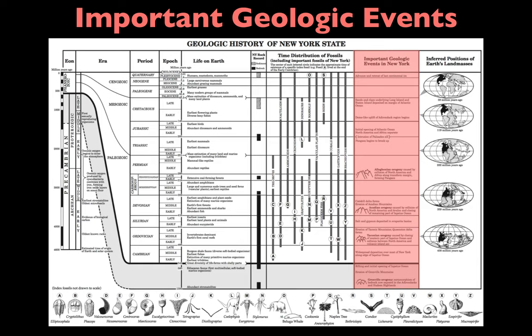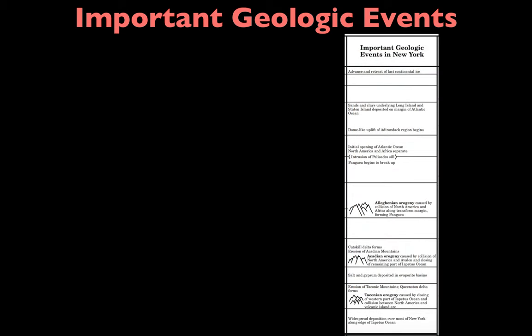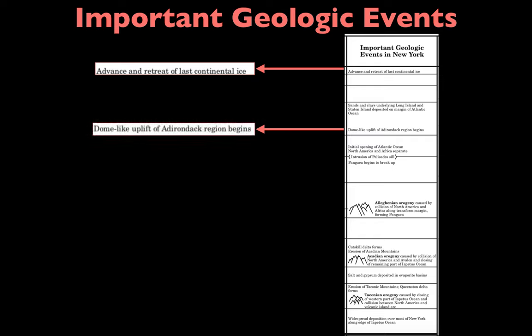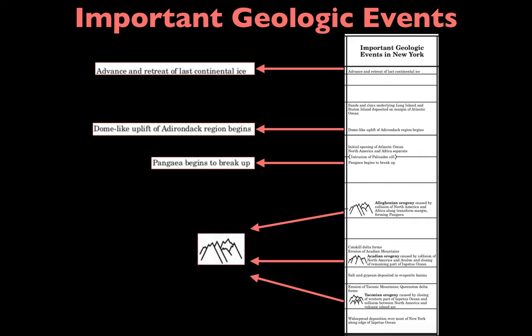Another column covers important geologic events in New York State's history. The most recent event at the top of the chart is the advance and retreat of the last continental ice sheet — the last ice age New York State experienced. Further down is the dome-like uplift of the Adirondack region, followed by the breakup of Pangea. At the bottom of the chart, mountain symbols represent different orogenies — mountain building events that were significant in New York State's history.